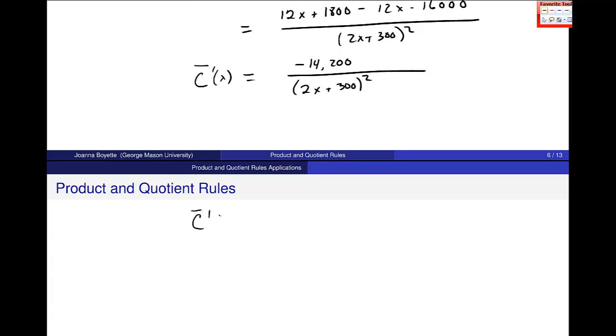So I'll plug that in, average cost at 280 boxes, negative 14,200 over 2 times 280 plus 300 squared.